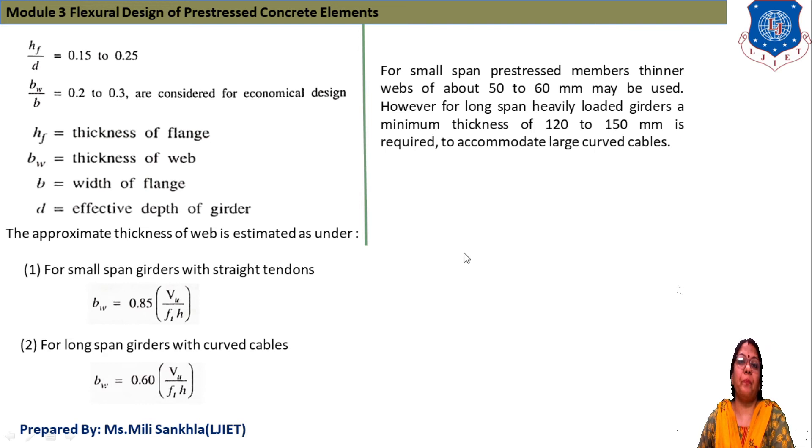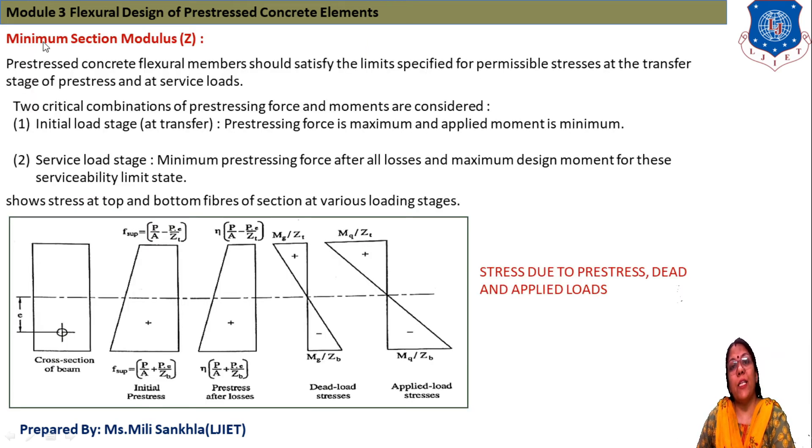Now we calculate section modulus. Minimum section modulus: pre-stressed concrete flexural members should satisfy the limit specified for permissible stress at transfer stage and also at service stage. Two critical combinations of pre-stressing force and moment are considered. First one is initial load stage, that is for section modulus at transfer condition: pre-stressing force is maximum and applied moment is minimum. At service condition: minimum pre-stressing force after all losses and maximum design moment.